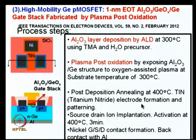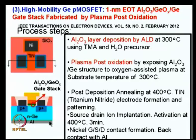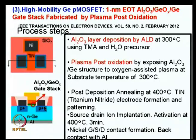After the plasma oxidation, post-deposition annealing was done at 400°C. Titanium nitride electrode was formed for the gate, making the MOS structure. Source and drain were implanted by P+ ion implantation with activation at 400°C for a short duration. The transistor has a gate stack of Al2O3/GeO2, with gate, source, and drain contacts in nickel, and an aluminum back contact.